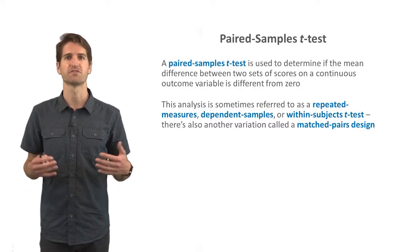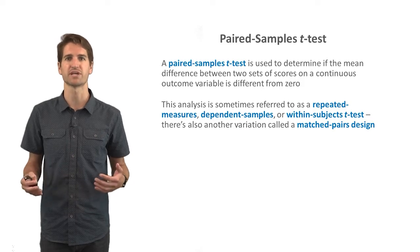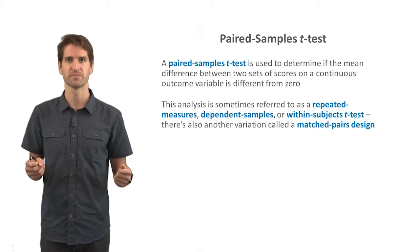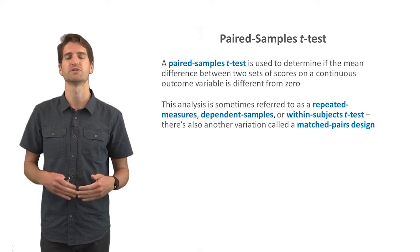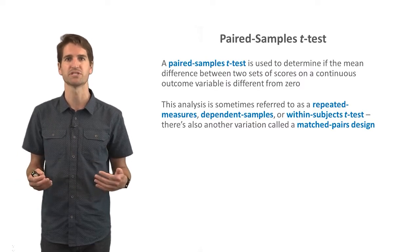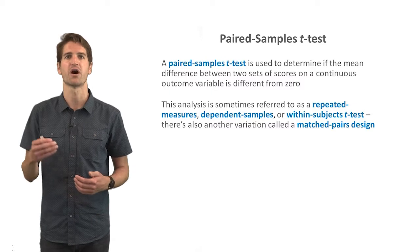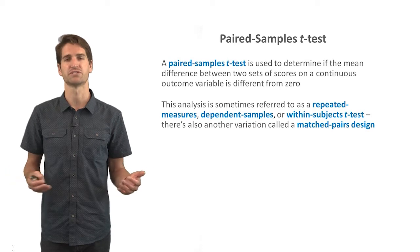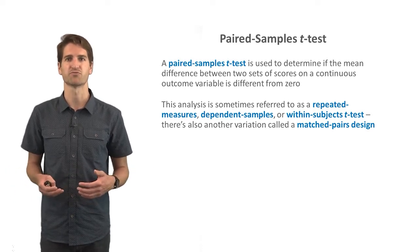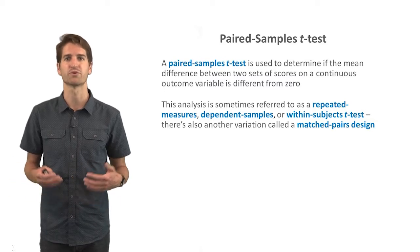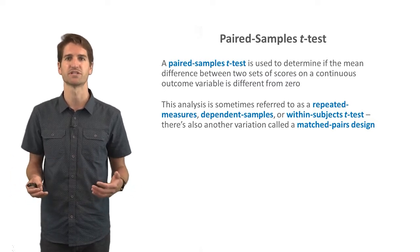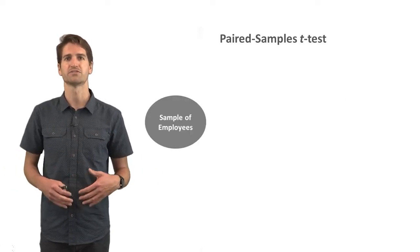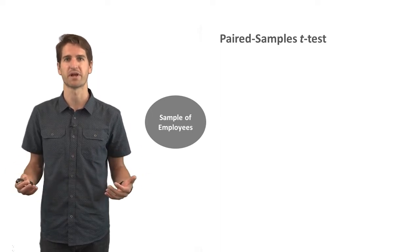A paired samples t-test is used to determine if the mean difference between two sets of scores on a continuous outcome variable is different from zero. We're comparing two sets of scores here — if you were to compare three or more sets of scores, you would need a different type of analysis. This analysis is sometimes referred to as a repeated measures, dependent samples, or within-subjects t-test, and there's also a matched pairs design that has some similarities.